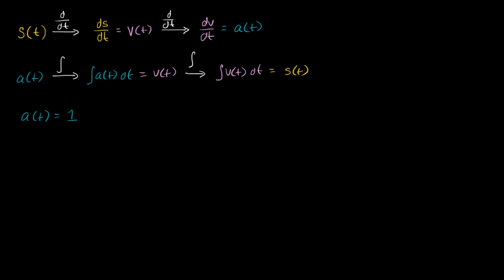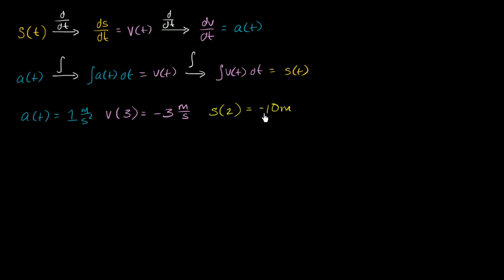We don't know the velocity expression, but we know the velocity at a particular time; and we don't know the position expression, but we know the position at a particular time. So let's say we know that the velocity at time three seconds is negative three meters per second. And let's say we know that the position at time two seconds is equal to negative 10 meters. So if we're thinking in one dimension along the number line, it's 10 to the left of the origin. Given this information, can we figure out the actual expressions for velocity as a function of time and position as a function of time?